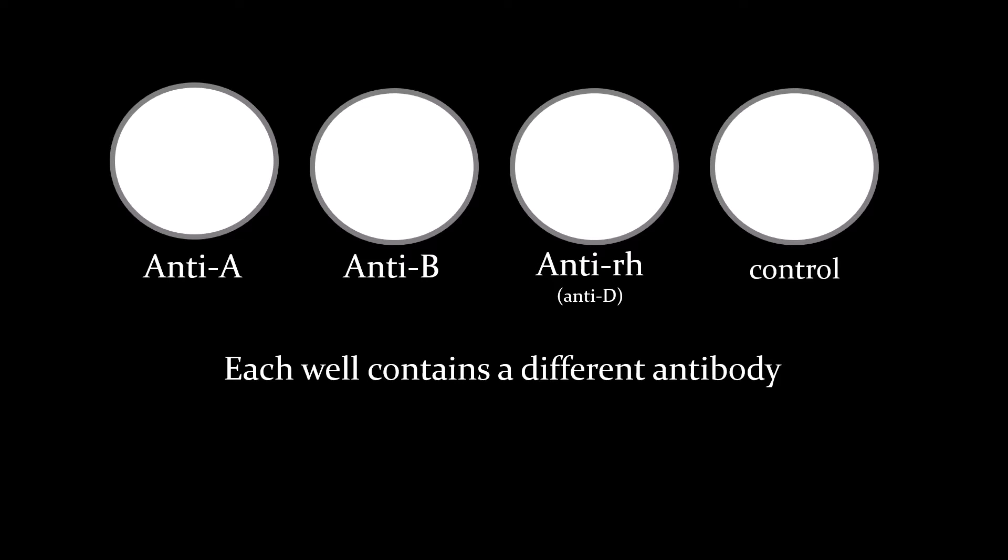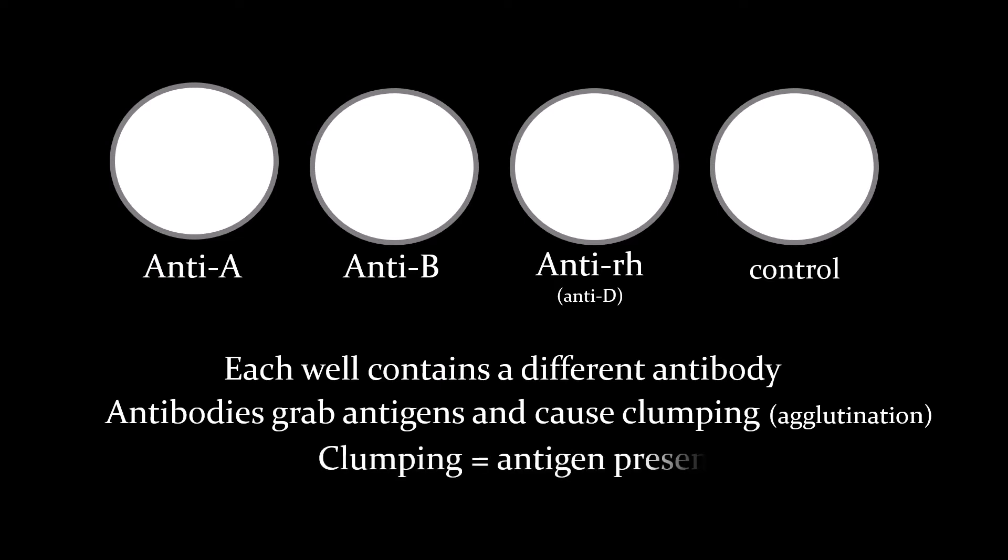How antibodies work is each antibody fits a specific antigen. Each antibody can grab a specific antigen and it's going to cause clumping. The word for clumping is agglutination. If you put a drop of blood into the well and you see clumping, that means the antigen is present.